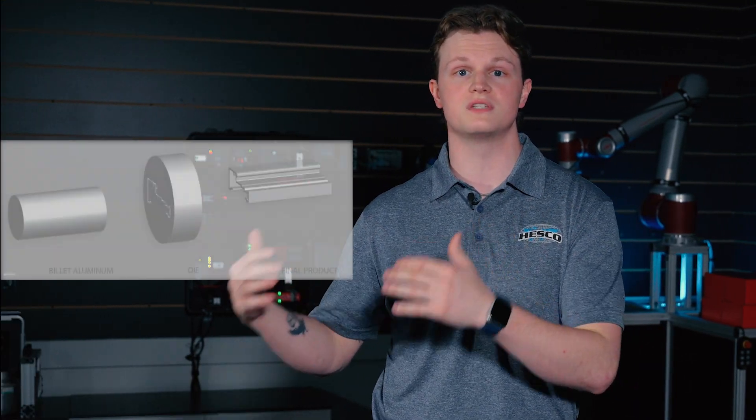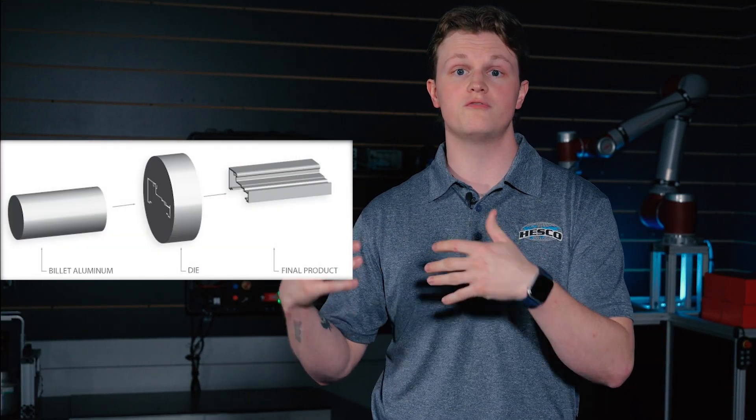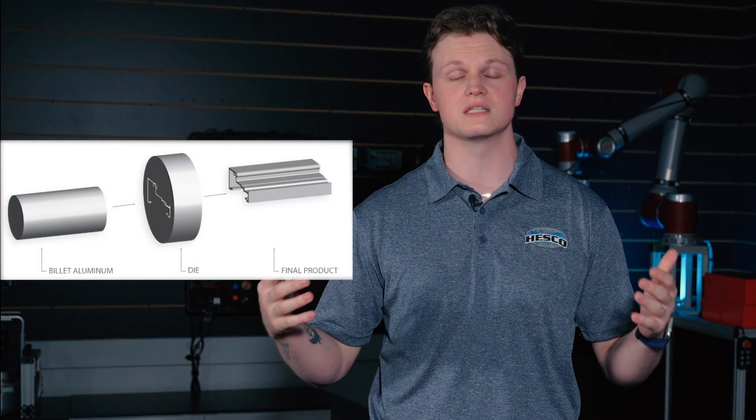Aluminum profiles start with aluminum blanks being heated to extremely high temperatures and then being forced through a series of dies to form different sizes and shapes. This process, also known as the extrusion process, ultimately gives us an aluminum profile's final form.